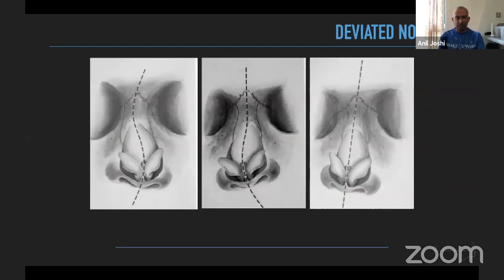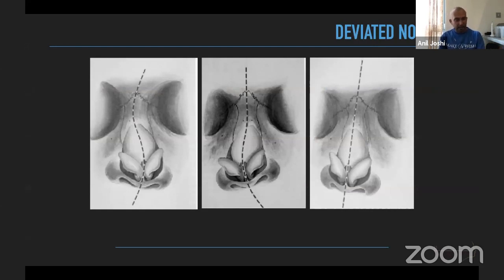These schematic pictures illustrate the S-shaped, C-shaped, and linear oblique deformities. In each case there may be bony structural deviation of the dorsum along with bony septal deviation, as well as deviations of the cartilaginous portion and the upper lateral cartilages — all in various combinations.